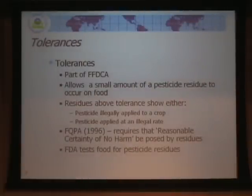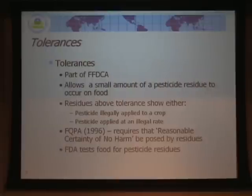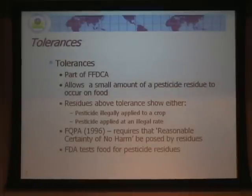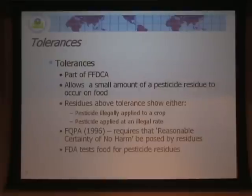Now, tolerances. These are issued under FFDCA, not FIFRA. A tolerance is basically a license allowing a small amount of pesticide residue on a food item. Originally, a tolerance was a regulatory tool to detect whether a pesticide was applied to the wrong crop or at a rate higher than allowed on the label — if residue exceeded the tolerance, FDA would seize the crop. However, in 1996 when FQPA was passed, an additional requirement was added: reasonable certainty of no harm. Not only did excess residue indicate illegal application, but we also had to show that any residue present was safe and would not harm people.